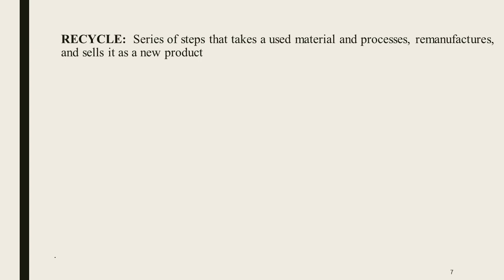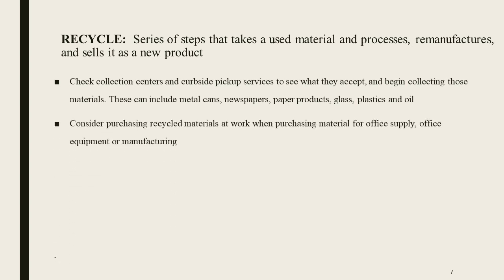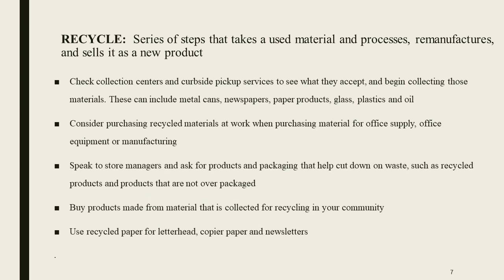Recycle. It includes a series of steps that take a used material, process, remanufacture, and sell it as a new product. Check collection centers and curbside pickup services to see what they accept and begin collecting those materials — these can include metal cans, newspaper, paper products, glass, plastics, etc. Consider purchasing recycled materials at work when buying office supplies, office equipment, or manufacturing materials. Speak to store managers and ask for products and packaging that help cut down on waste, such as recycled products and products that are not over-packaged. Buy products made from materials collected for recycling in your community. Use recycled paper for letterhead, copy paper, and newsletters.